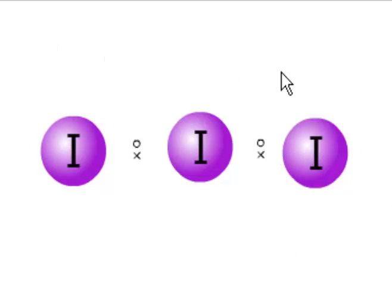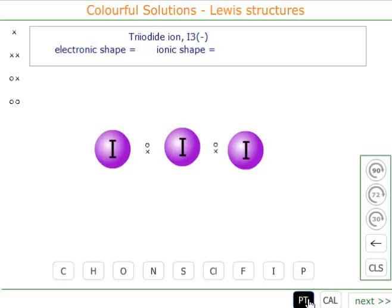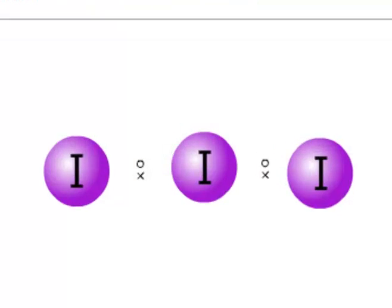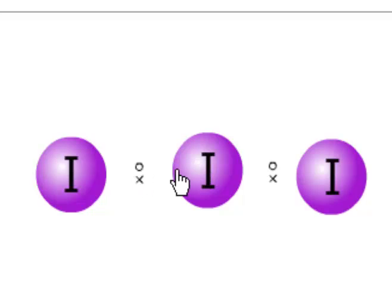Now the central iodine, and the other iodines—all the iodines are from group 7 of the periodic table. That means they've got 7 electrons in the outer shell. The central iodine here has used 2 of its 7, so it's got another 5 to use. But it's also got to have an extra minus here, so it needs another 6 electrons.